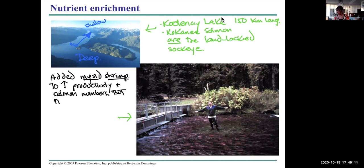They added misid shrimp to increase productivity and salmon numbers, but the salmon crashed except for that shallow arm, which lasted a few years. In order to understand what's going on, you have to understand the ecosystem. And in this case it wasn't understood well enough.